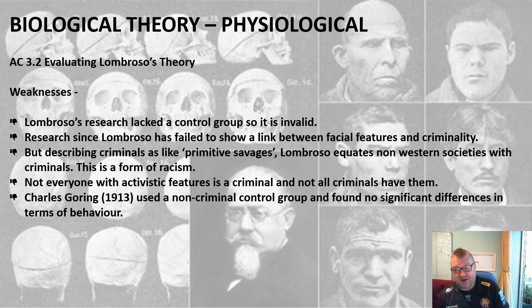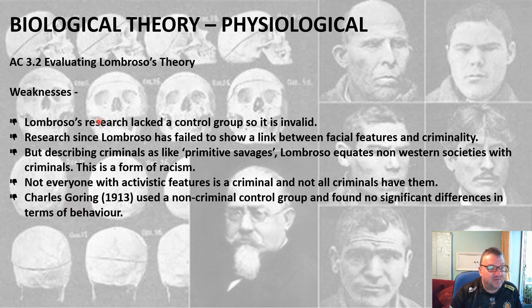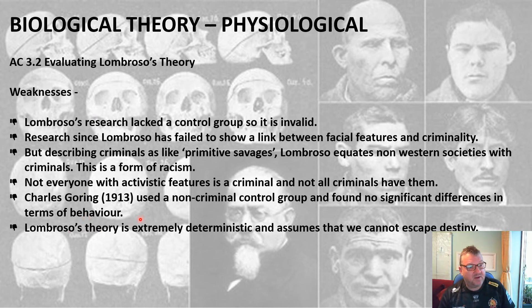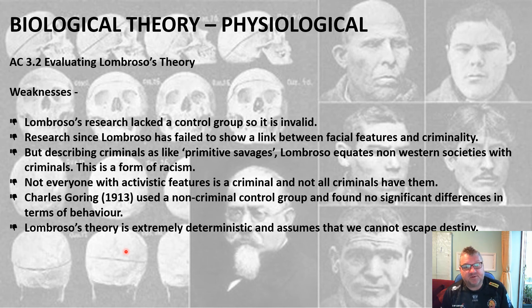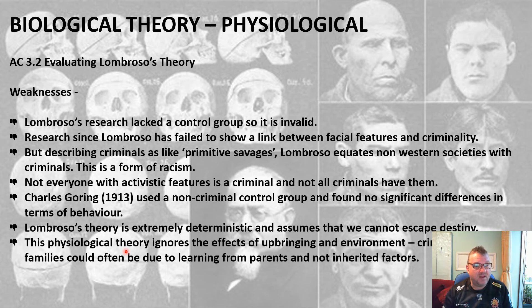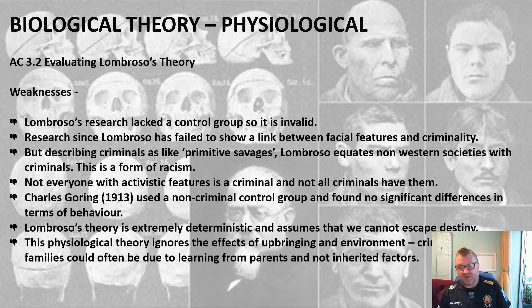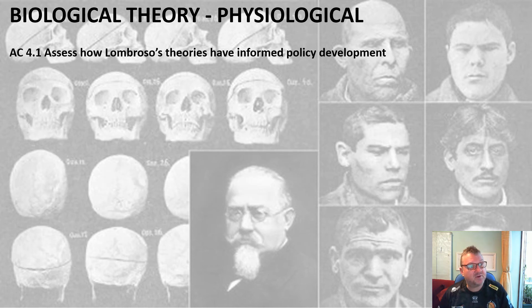Criminologist Charles Goering used a non-criminal control group and found no significant differences in behavior, confirming the flaw of Lombroso having no control group. His theory is also extremely deterministic — once born criminal, you can't escape it. It assumes we can't escape our destiny. His physiological theory ignores the effects of upbringing and environment, focusing on nature over nurture. Crime running in families could be due to learned behavior from parents, not inherited biology.